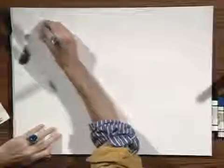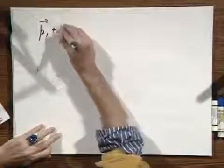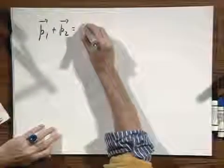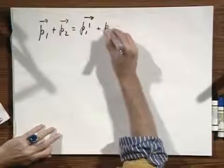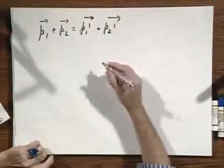So if we write this down in general form, p1 plus p2 equals p1 prime, that is after a collision, plus p2 prime. We are dealing here with two objects.